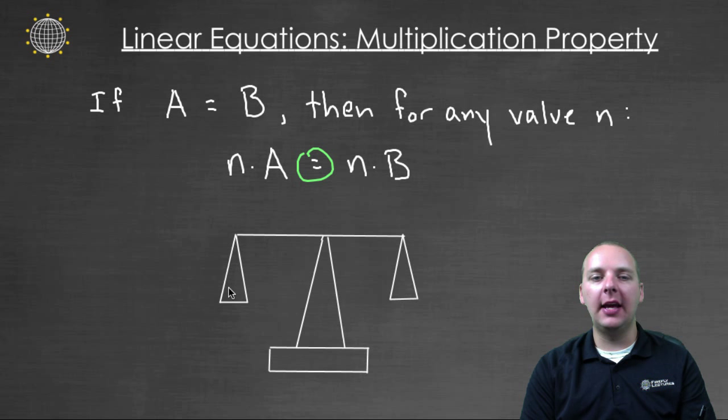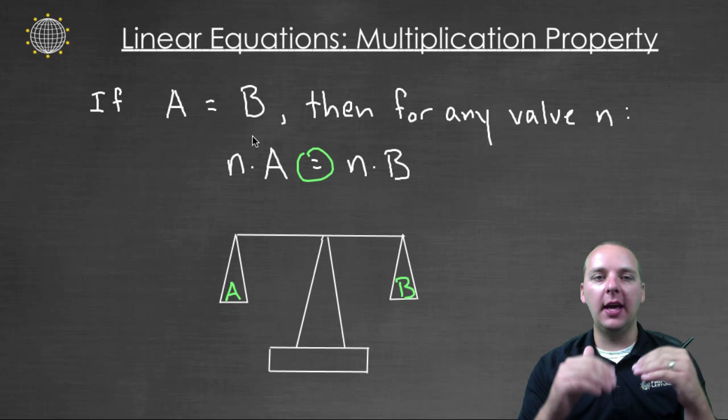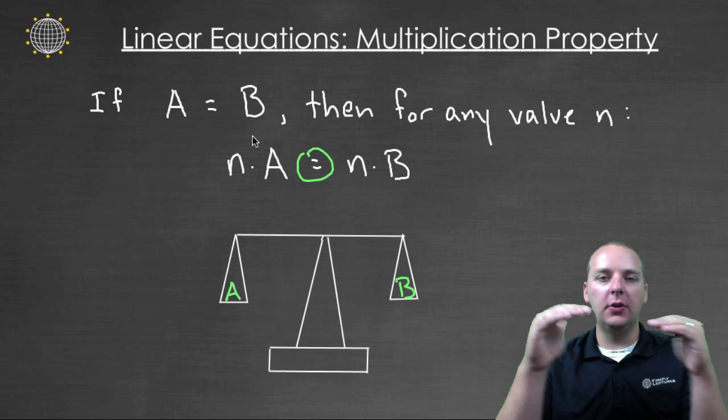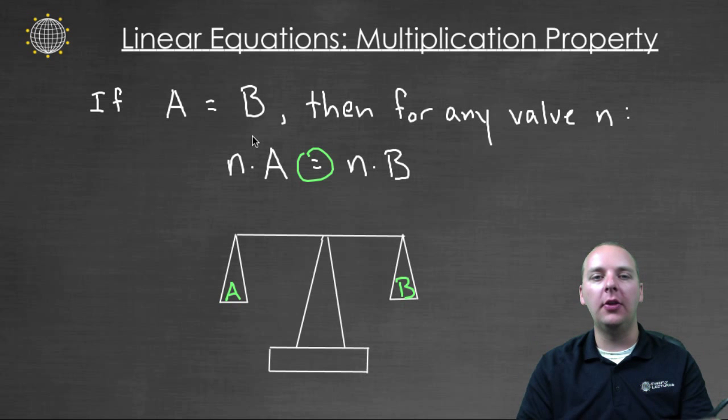So you can think of this like a scale, where we're weighing one side against another. And we start off with an equal scale, A is equal to B, so this is exactly flat and horizontal, one's not heavier than the other.